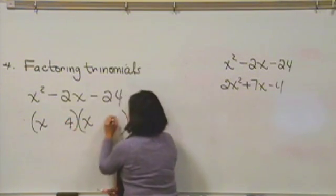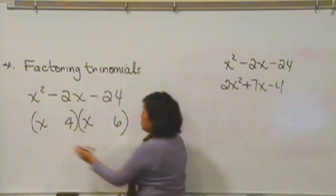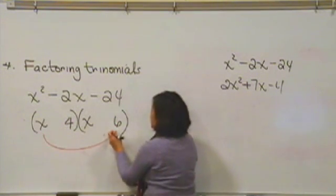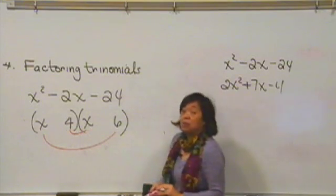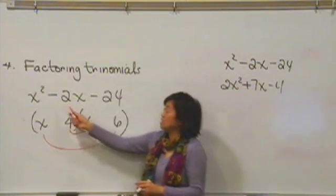Hopefully you eventually came on 6 and 4, because if we check the outside ones, 6x, and the inside ones, 4x, we can make those definitely into a negative 2.